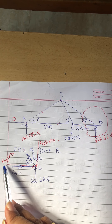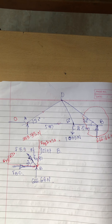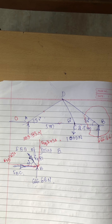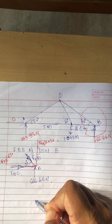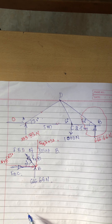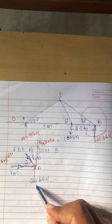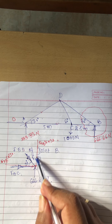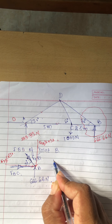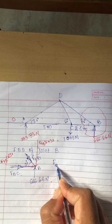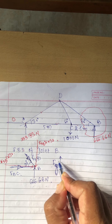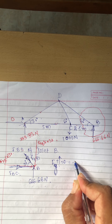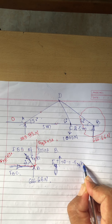Horizontal direction has FDB and FBC — both unknown — so you may not get a direct solution. Instead, first go for ΣFy = 0. Total forces in vertical direction equal to zero. Two forces are in the vertical direction: 666.66 Newton and FDB sine of 30. Since only two are there, apply ΣFy = 0, taking upward as positive. FDB is going downward, so it is negative: minus FDB sine of 30.